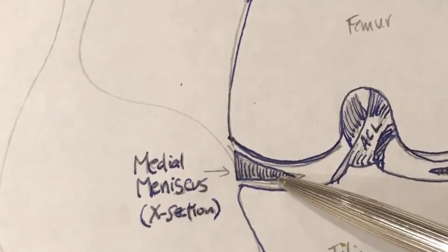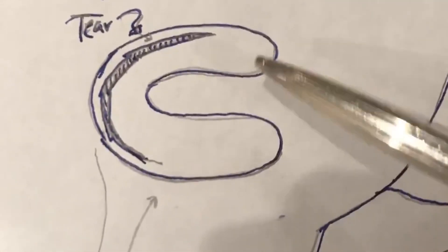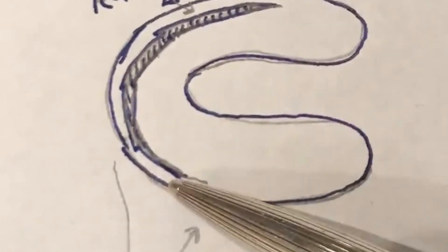So if we look at the medial meniscus from above, a tear would look like this.